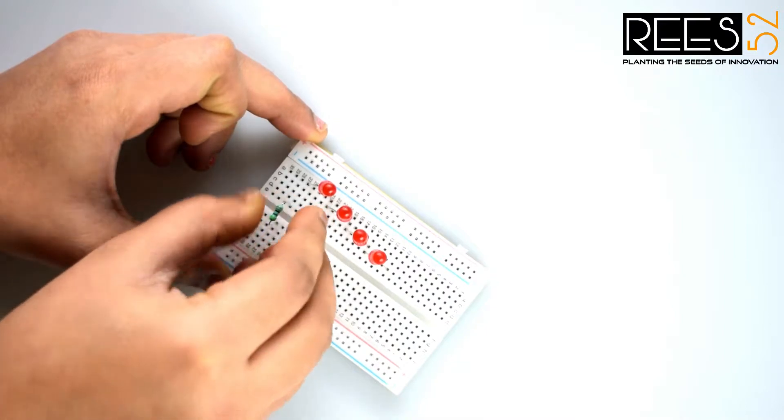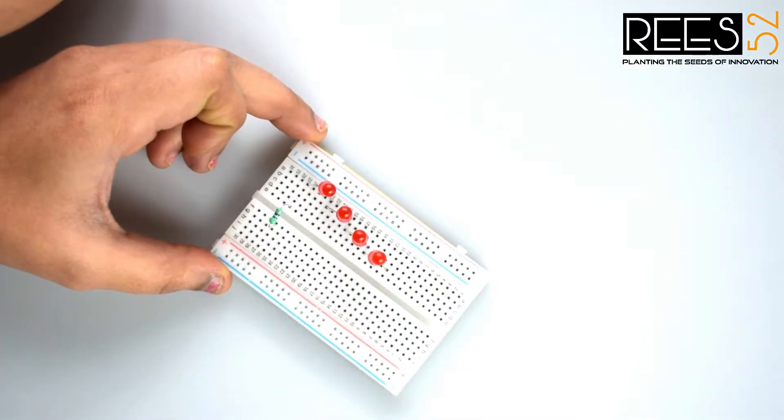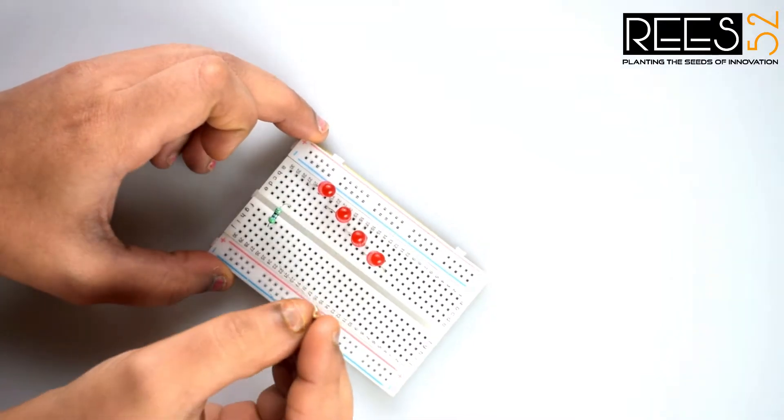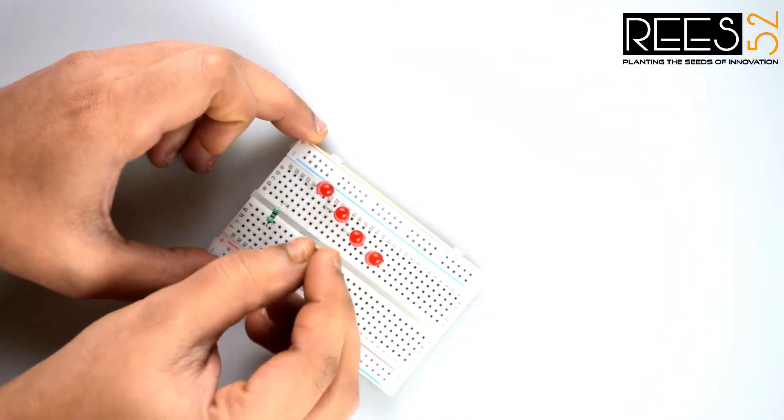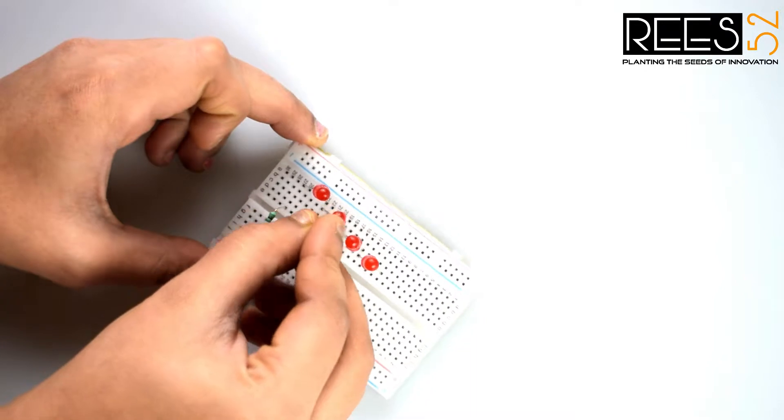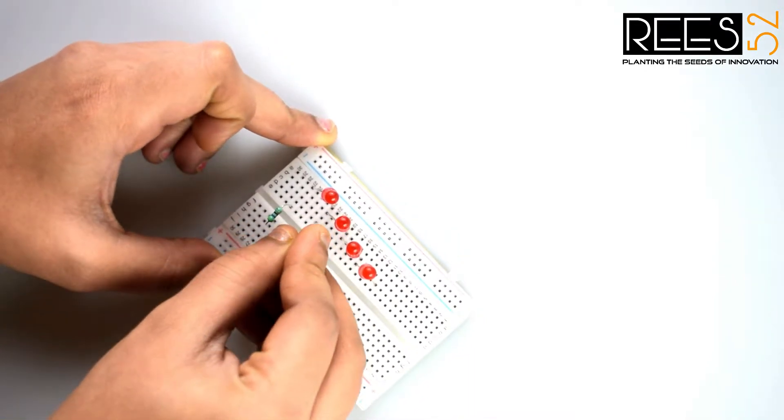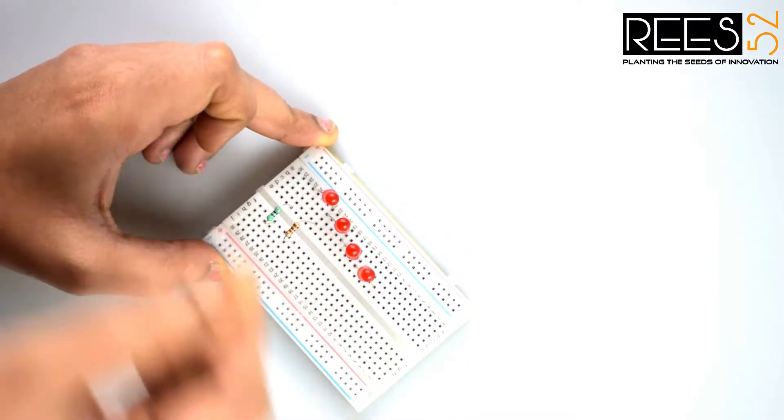Now connect a 470 ohm resistor to the first LED. Then connect a 1 kilo ohm resistor to the junction point of first and second LED.